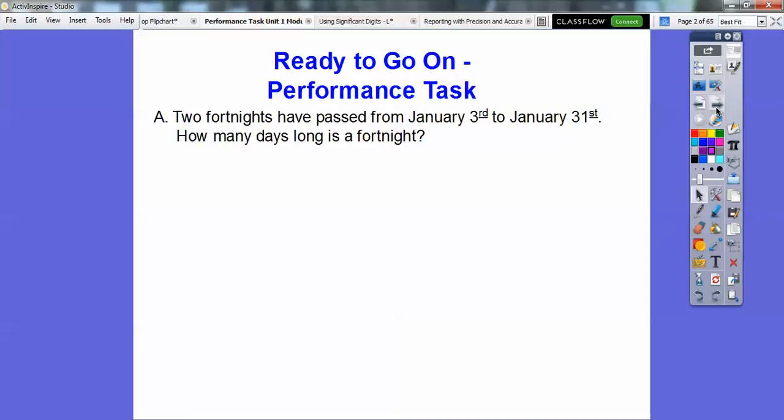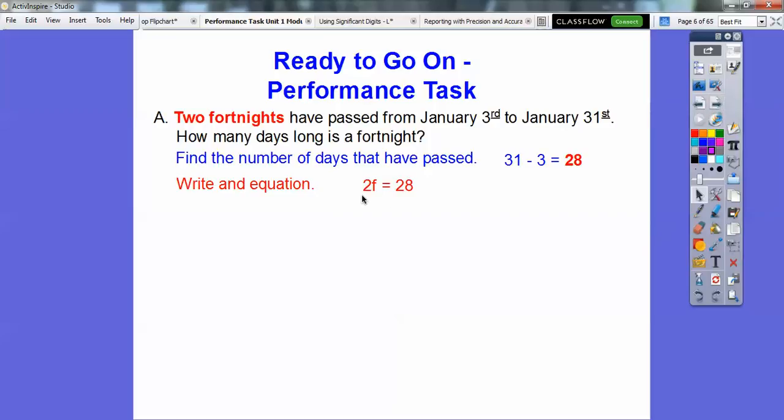So two fortnights have passed from January 3rd to January 31st. How many days long is a fortnight? Well, I've never heard of that word, I actually looked it up. Let's go through the math here, so let's first find the number of days that have passed. The days that passed from January 3rd to January 31st, we're just going to subtract as 28 days. So let's write an equation. So two fortnights, we'll call that 2f, is going to equal that 28 days, then we divide both sides by 2. When we do that, we get 28 divided by 2 is f equals 14. So a fortnight equals 14 days.